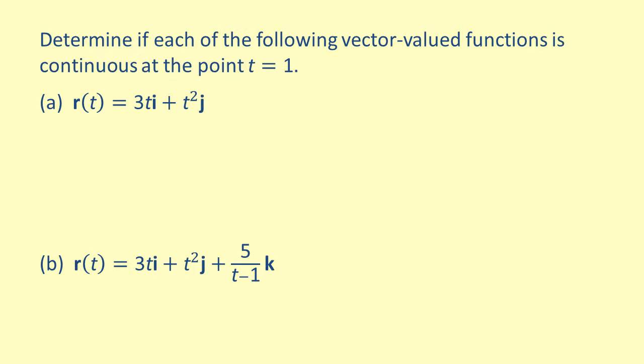We note that the two component functions f of x equals 3t and g of x equals t squared are polynomial functions, which are defined for all real numbers. So we know that r of 1 exists.